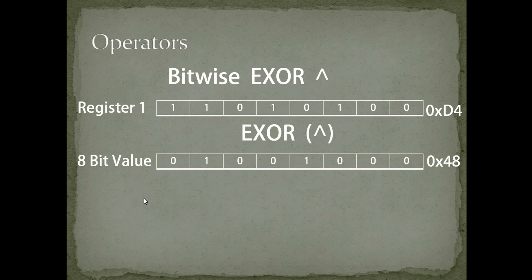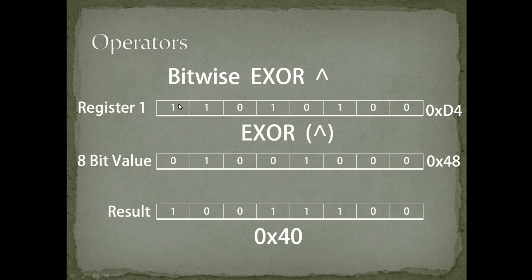Let's take the XOR operator. Taking the same register 1 and the 8-bit value, the XOR results are: 1^0=1, 1^1=0, 0^0=0, 1^0=1, 0^1=1, 1^0=1, 0^0=0, 0^0=0. If the same inputs exist the result is 0; if different inputs exist the result is 1. So I am getting the result as 0x9C.